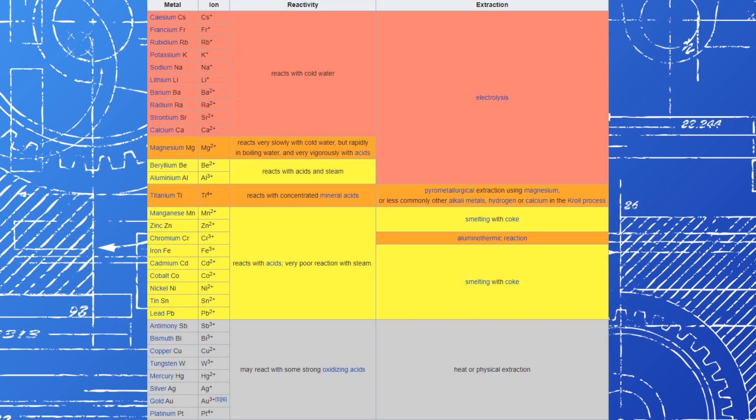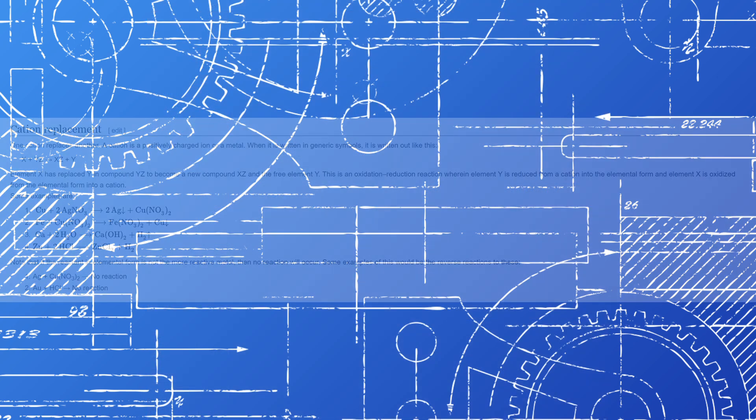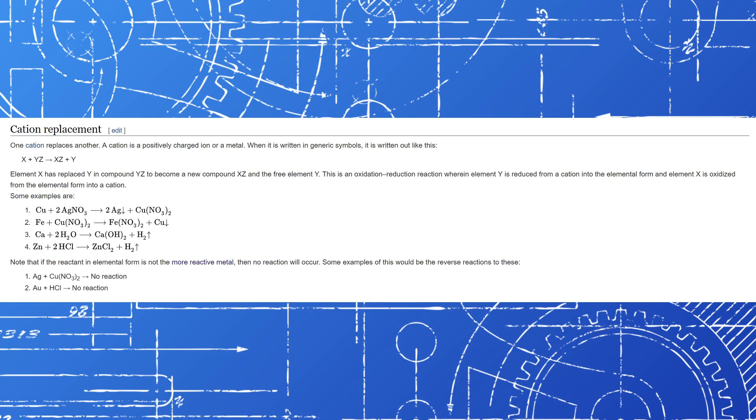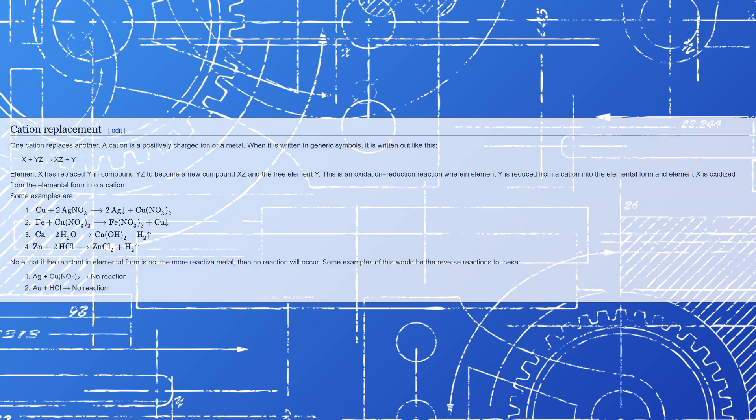The relative locations of two metals in the reactivity series plays heavily into whether a single displacement reaction will take place. A single displacement reaction occurs like this. Essentially two compounds, usually a compound in solid form and another in aqueous form, swap places.